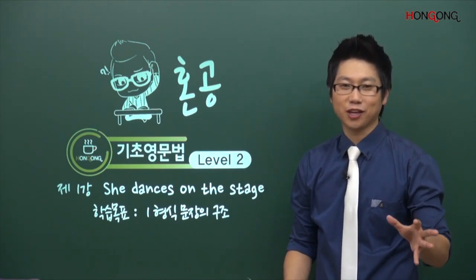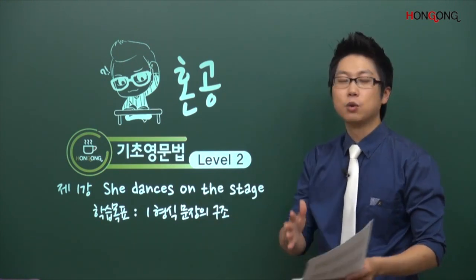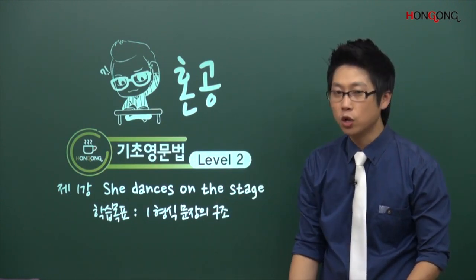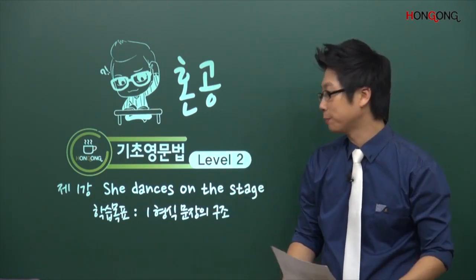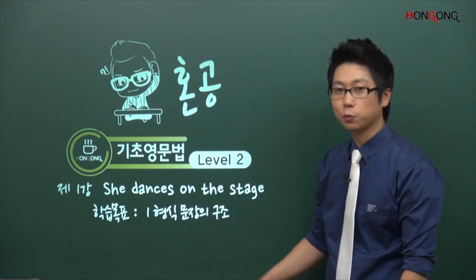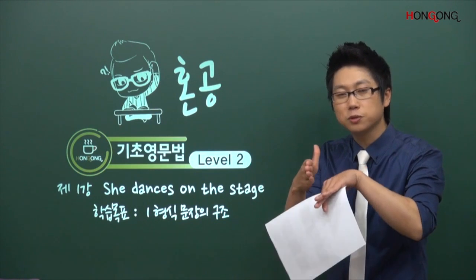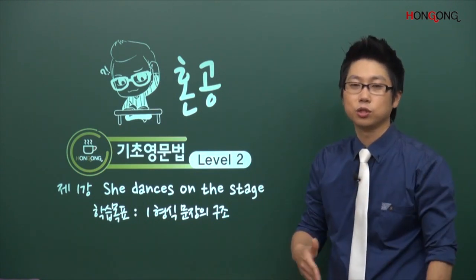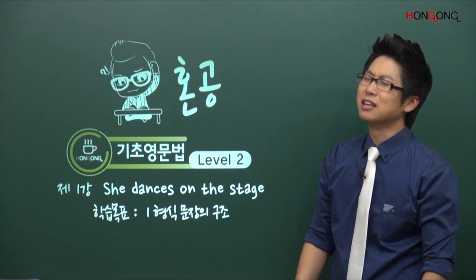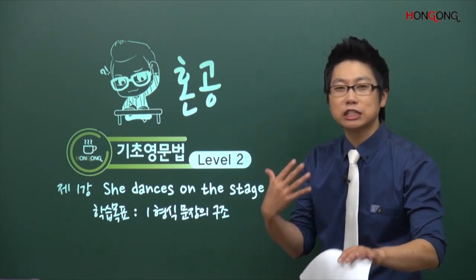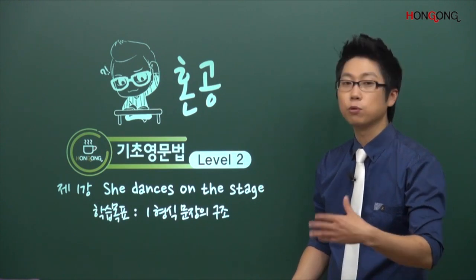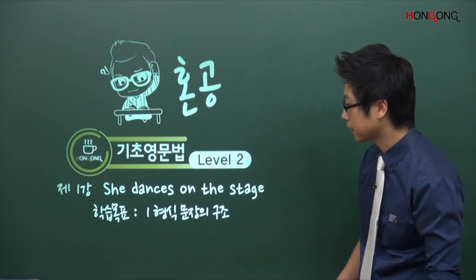레버1에서는 굉장히 쉽게 했고, 레버2에서는 조금 더 크게 문장을 보는 연습을 하고 그 속에 있는 문법 요소들을 한 번씩 확인해볼 겁니다. 매 단원마다 타이틀 읽고 학습 목표가 있는데, 목표를 굉장히 조금씩 해놨습니다. 완전 학습을 할 수 있도록 했기 때문에, 영어를 아무도 구제하지 못했다는 분들도 레버1부터 2까지 듣고 복습을 하면 충분히 잘 하실 수가 있습니다.